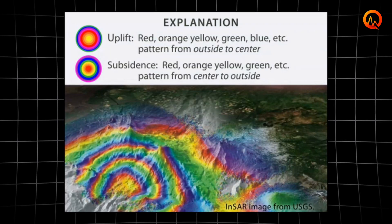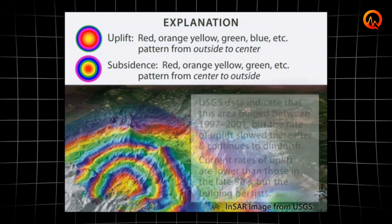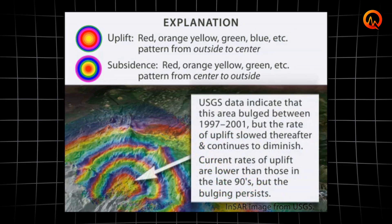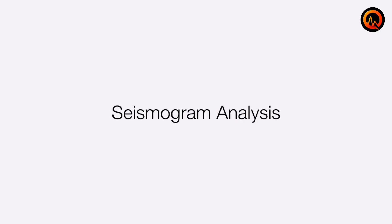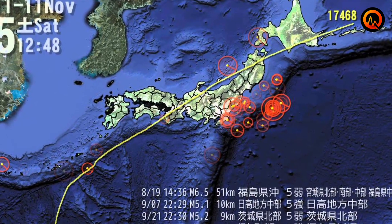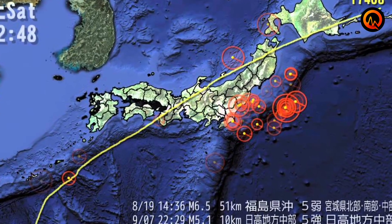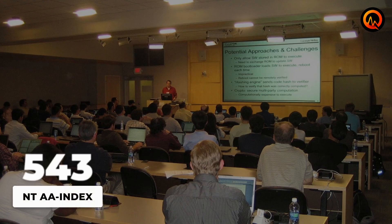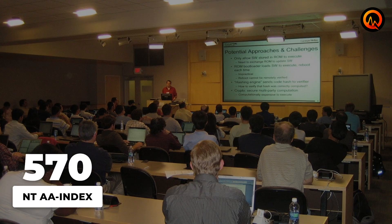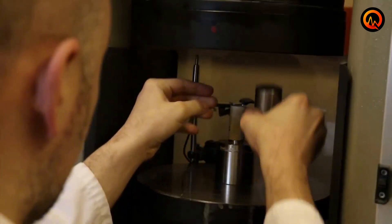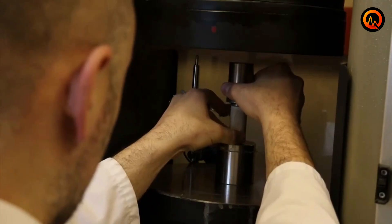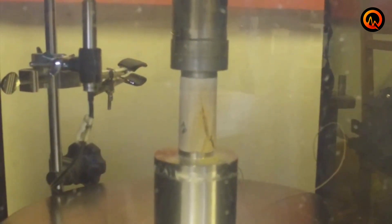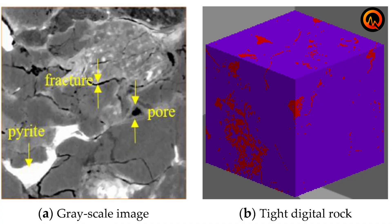Scientific evidence supporting electromagnetic influence on tectonic systems comes from multiple sources. Seismologists have documented correlations between geomagnetic storm intensity and earthquake frequency in certain tectonically active regions. The correlation is not perfect, but it is statistically significant enough to warrant investigation. Laboratory experiments using rock samples under controlled electromagnetic fields show measurable changes in fracture patterns and stress distribution.